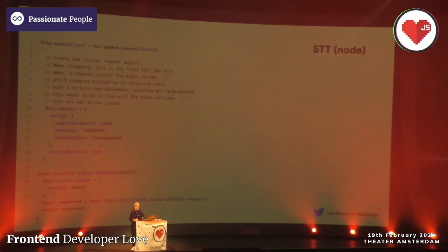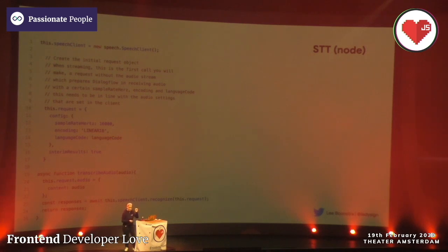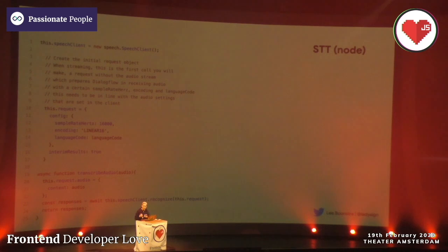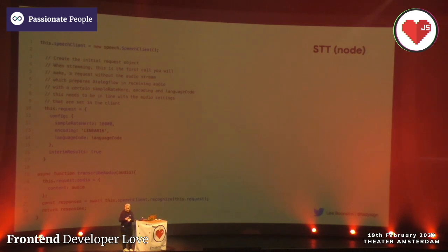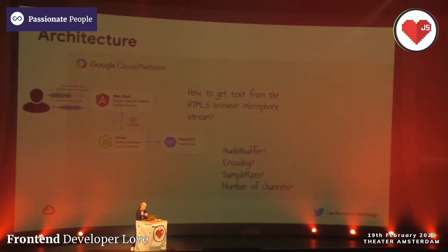Here you see the code for speech-to-text — it's not that difficult. I first create a speech client, and once I have the speech client I define the request. It's important that the settings match what you used on the front end. So where I said the desired sample rate was 16 kHz in my web app, I need to make sure it's also 16 kHz here — otherwise it wouldn't read the stream well. I set it to Linear 16, set the language code from the language picker, then pass it to the speech client with .recognize(), specifying the request object together with the audio stream, and I get a promise — in the response I get the text version.